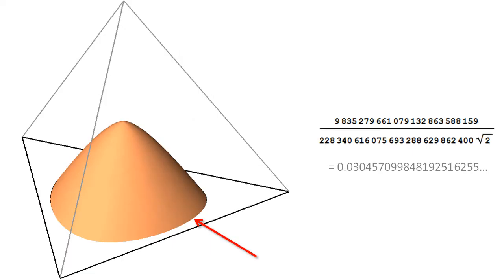The tetrahedron with all edges length 1 and one triangle boundary selected as sharp crease results in a piecewise smooth loop subdivision surface with enclosed volume of about 0.03. The exact value is the fraction indicated.